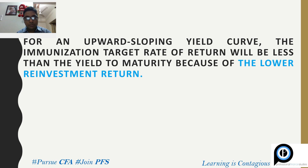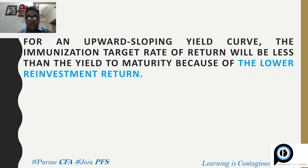Whenever we measure a portfolio's return we tend to measure it in terms of yield to maturity. Whenever you want to immunize your portfolio, the target rate of return has to be set so that whenever there is a change in interest rate, the reinvestment income and the price change due to interest rate exactly offset one another, so that you can lock in a rate of return when investing in a fixed income portfolio. So if you want to immunize, you have to set a target rate of return.